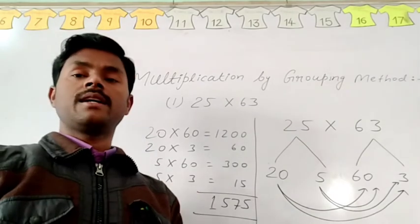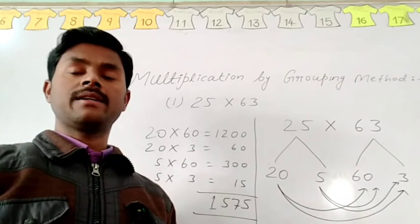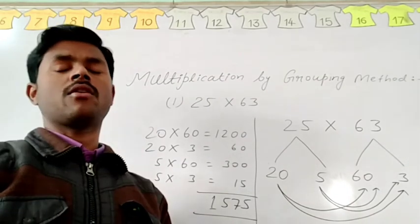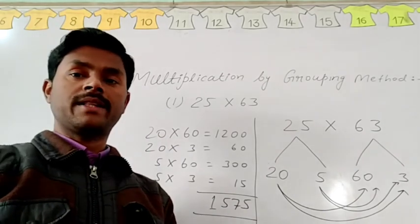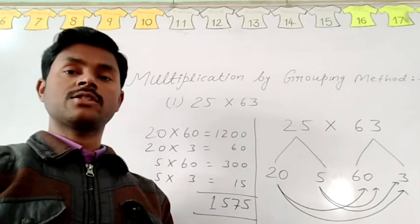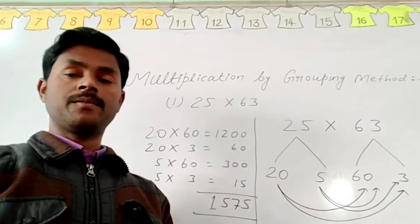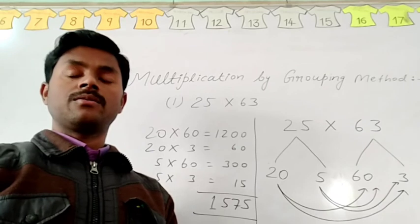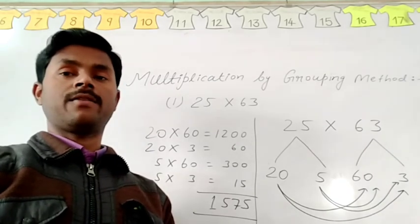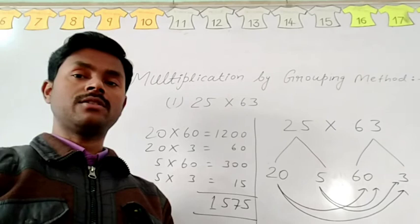So dear students, if you have to multiply any 2 digits or 3 digits or any digit numbers, then you can also multiply with grouping method. For grouping method, you need to group the numbers having 0. So you can multiply easily and you can find the answer in very short time.